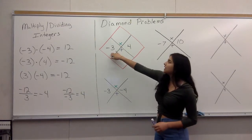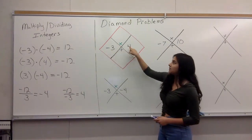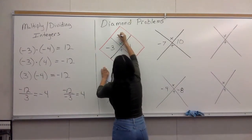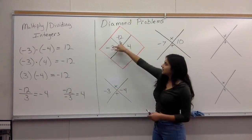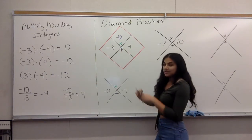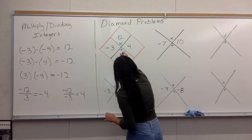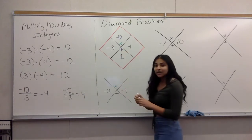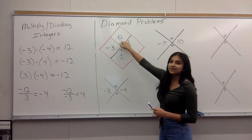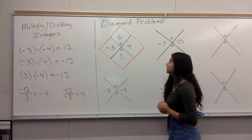We have negative three times four. Remember, a negative times a positive is going to equal a negative, so this is going to equal negative 12. Then we add them: negative three plus four. These are different rules — when you add, you take the sign of the bigger number, so it's going to give us positive one. When you're multiplying, it doesn't matter — a negative times a positive equals a negative. Remember the different rules.